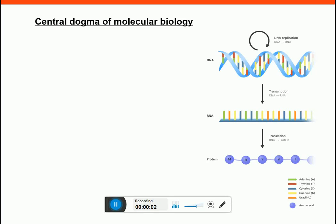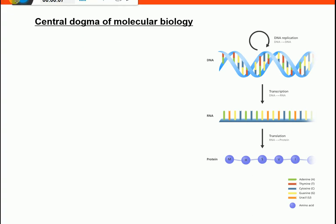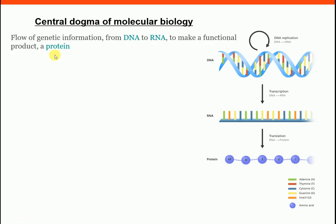In this lecture, I'm going to talk about the central dogma of molecular biology — a really important concept. The central dogma explains the full flow of genetic information from DNA to RNA, and from RNA to protein, to make a functional product.